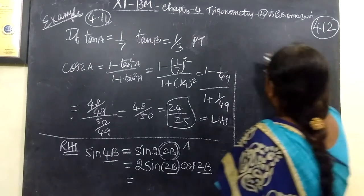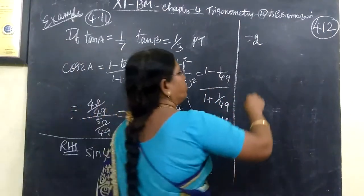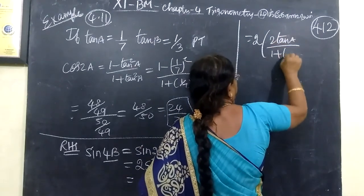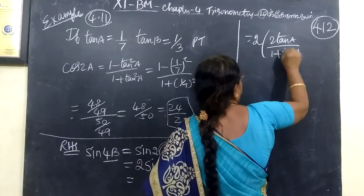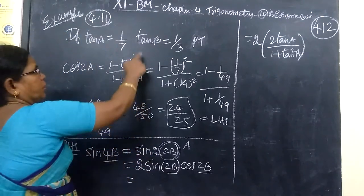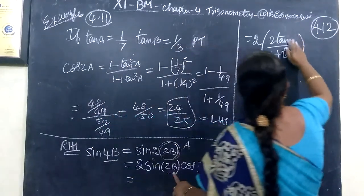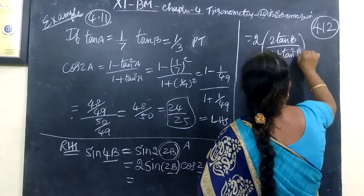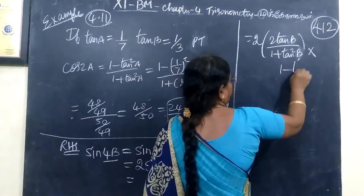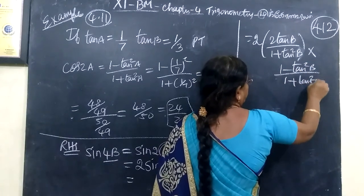This can be written as 2 into sin 2b. What is the formula? 2 tan b by 1 plus tan square b. Then cos 2b, 1 minus tan square b. Now, cos 2b, you are writing 1 minus tan square b by 1 plus tan square b.